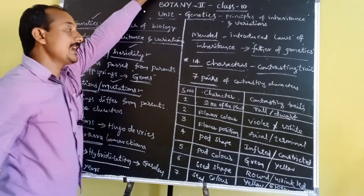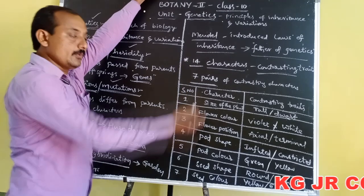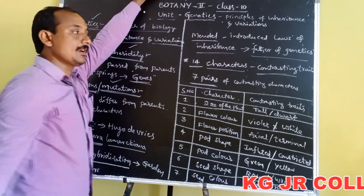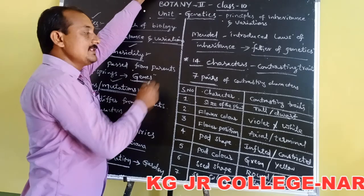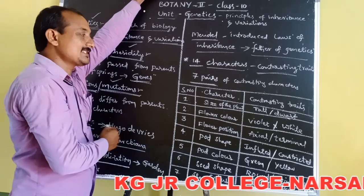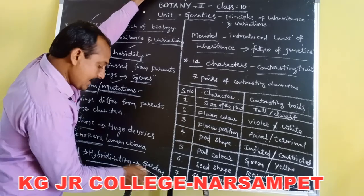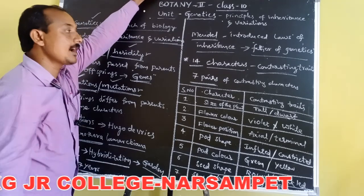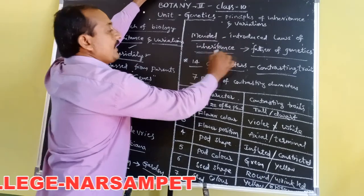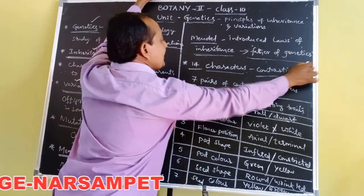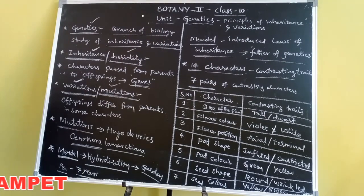Mendel used 14 contrasting traits and conducted hybridization experiments for seven years on the garden pea plant. He introduced the laws of inheritance and is regarded as the father of genetics.